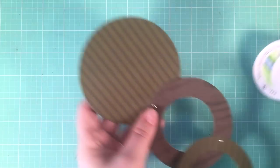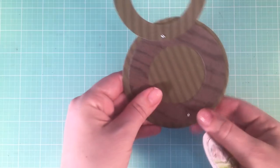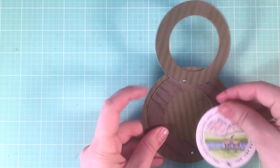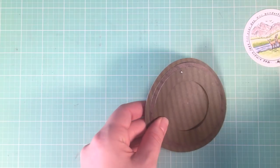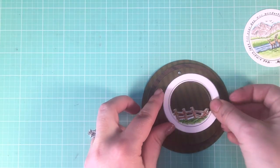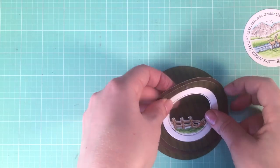From there I'm just going to start layering. So this is going to be the bottom of my card, so I want my image to be like so for the top.